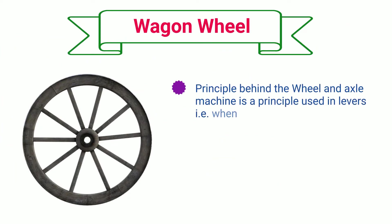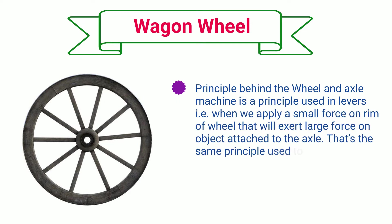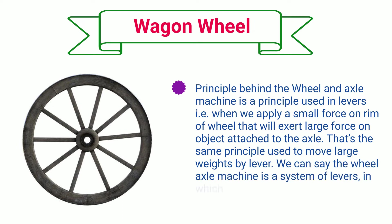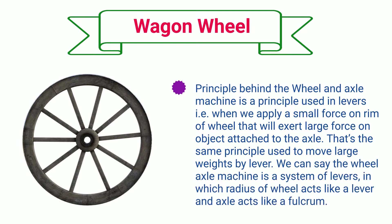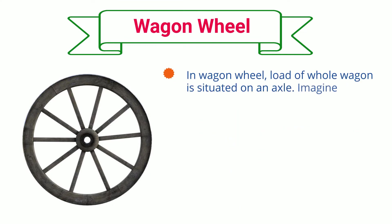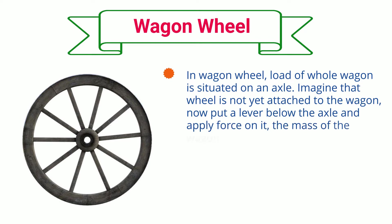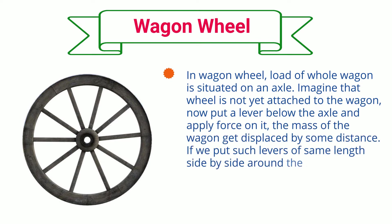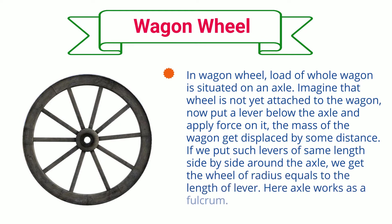Wagon Wheel. The principle behind the Wheel and Axle Machine is the same principle used in levers: when we apply a small force on the rim of the wheel, it exerts a large force on the object attached to the Axle. We can say the wheel-axle machine is a system of levers, in which the radius of the wheel acts like a lever and the axle acts like a fulcrum. In a Wagon Wheel, the load of the whole wagon is situated on an axle. If we put levers of the same length side by side around the axle, we get a wheel whose radius equals the length of the lever. Here the Axle works as a fulcrum.